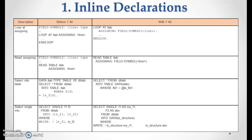Then we have select into table. Previously: data ITAB type table of DBTAB, then select * from DBTAB into table ITAB. In the new 7.40 syntax, instead of declaring ITAB separately, we declare it within the select statement: select * from DBTAB into table data(ITAB) where FLD1 equals @LB_FLD1.